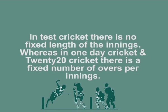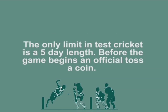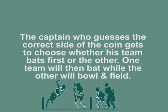Test cricket is a game that spans over two innings. This means that one team needs to bowl the other team out twice and score more runs than them to win the match. In test cricket there is no fixed length of the innings, whereas in one-day and Twenty20 cricket there is a fixed number of overs per inning. The only limit in test cricket is a five-day length. Before the game begins, an official tosses a coin; the captain who guesses the correct side gets to choose whether his team bats first or the other.